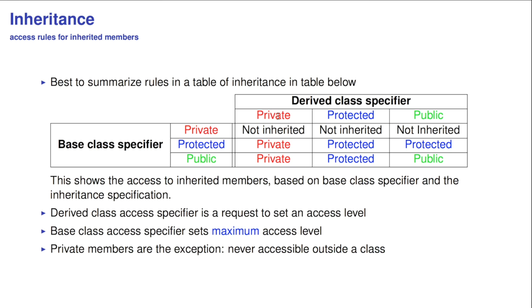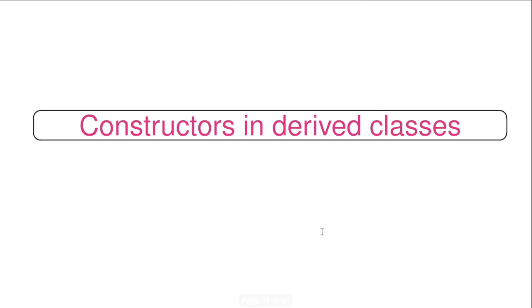And you can summarize those rules in the table below. So, you've got three choices for how you inherit the base class, so the derived class specifier: private, protected, and public. And you've got three choices for how you declare an element in the base class: private, protected, and public. If it's private in the base class, there's no inheritance. If it's protected in the base class, it's either private if it's inherited privately, or protected in the two other cases. And, if it's actually public in the base class, it's completely equal to how we inherit the derived class. So, if we inherit it privately, it becomes private in the derived class. Protected or public in the derived class. And that's perfectly fine. It shows that the derived class access specifier is a request to set an access level. But it may be denied because the base class specifier sets the maximum access level.